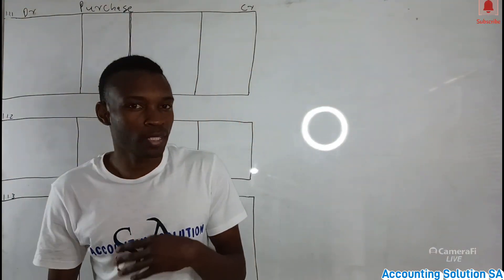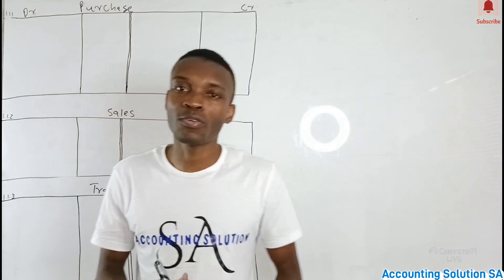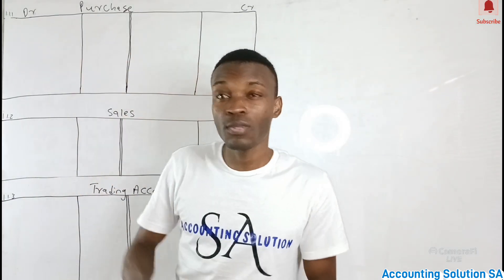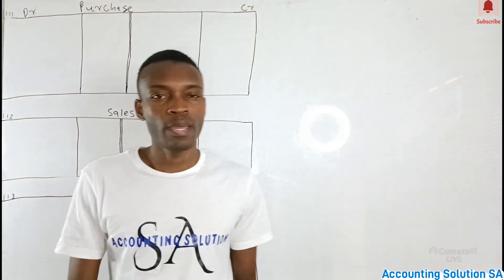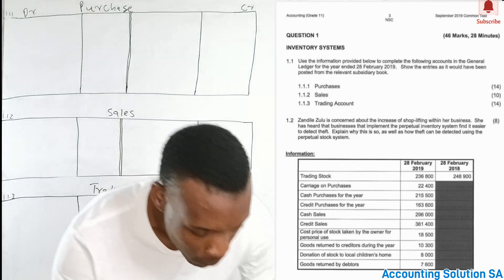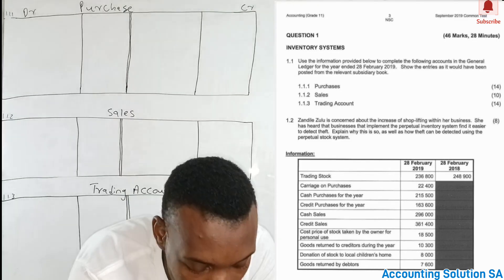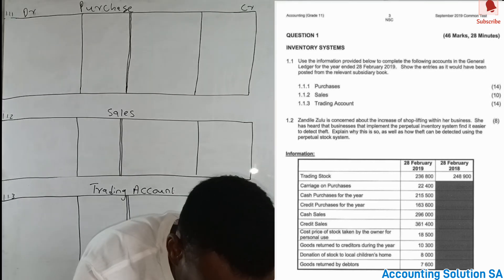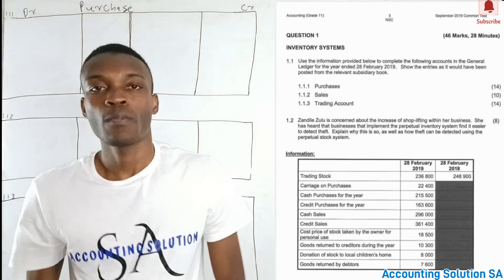In today's video we are going to do an inventory system. Remember we did part one where we were trying to attempt the previous question paper, so I decided to look for other papers so you can see the different ways they can set this kind of question. In today's video we are going to prepare a purchase account, a sales account, and trading account according to a previous year question paper. The question says: use the information provided to complete the following accounts in the general ledger for the year ended 28 February 2019 and show the entry as it will be posted from the relevant subsidiary books. We have 1.1.1 prepare a purchase account for 14 marks, 1.1.2 sales account, and 1.1.3 trading account.